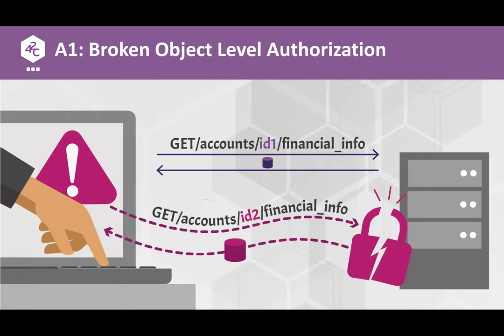Number four is Lack of Resources and Rate Limiting — your typical denial-of-service or distributed denial-of-service scenarios. This is a vulnerability where you don't have proper rate limiting or aren't checking data sizes being sent. As a result, attackers can overwhelm your server, bring it down, or make it non-responsive.